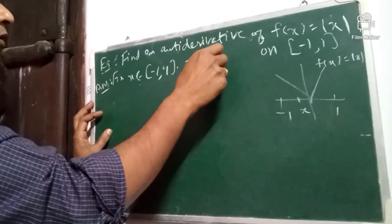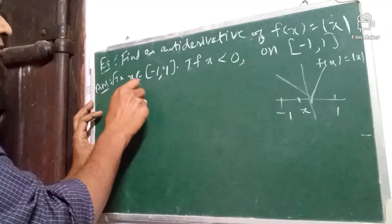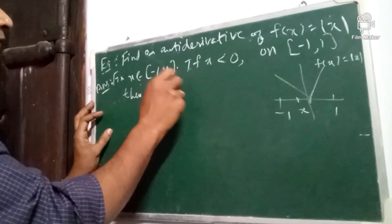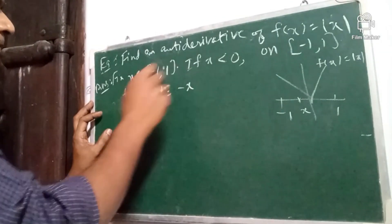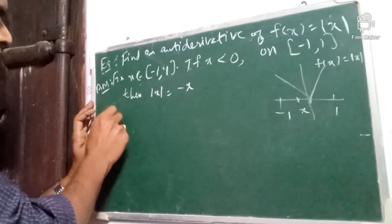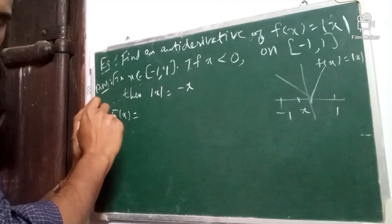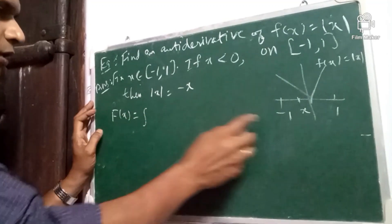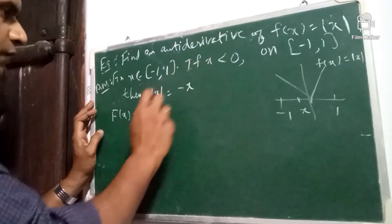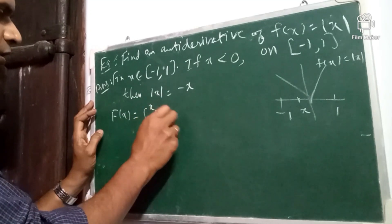If x is less than 0, then what is mod x? It is minus x. Now, we shall find capital F of x, the antiderivative, using the Fundamental Theorem of Calculus. So, it is integral from the lower limit minus 1 to this fixed point x of small f of t dt.